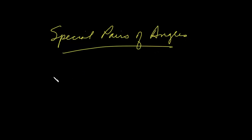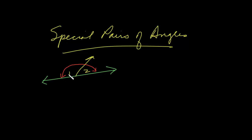Again, we started with the supplementary pairs. We had a line with a ray emanating from that line — a common ray — and we have angle 1 and angle 2 which are next to each other. We recognize that these are a linear pair and they're supplementary, meaning that the measure of angle 1 plus the measure of angle 2 would be 180 degrees. They're supplementary and a linear pair.